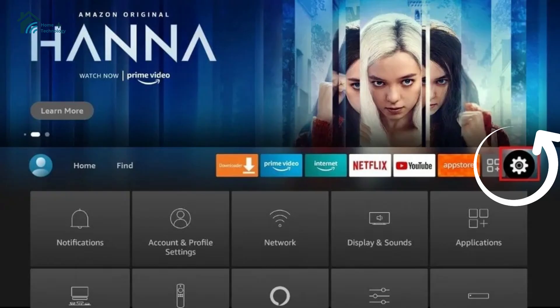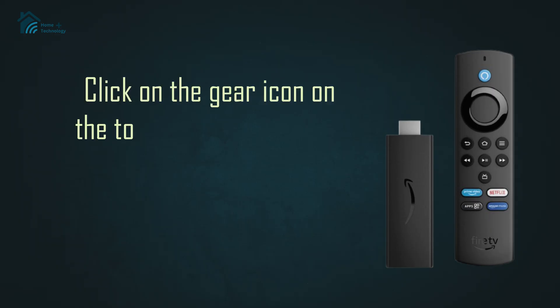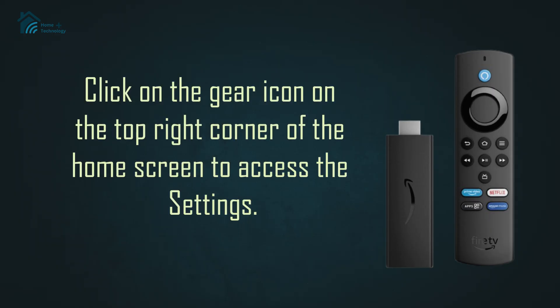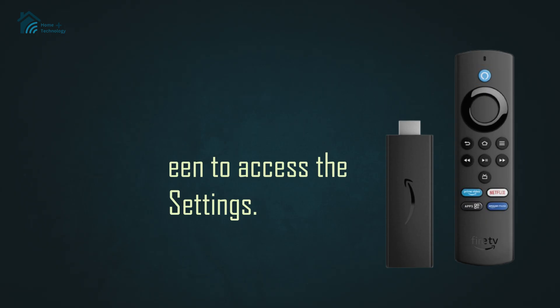The first step is to navigate to the Settings menu on your Fire Stick device. Click on the gear icon on the top right corner of the home screen to access the settings.